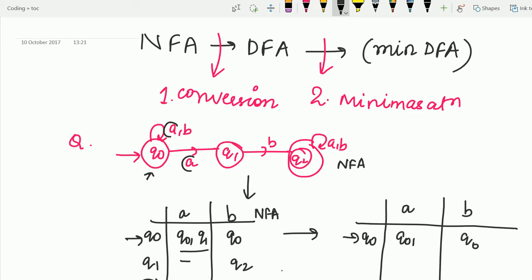So the second step is that whatever you have got it here in the entries, you have to make the, whatever the reachable states are there. You have to make the entries for them. So for Q01, we have to consider the values of Q0 as well as of Q1.